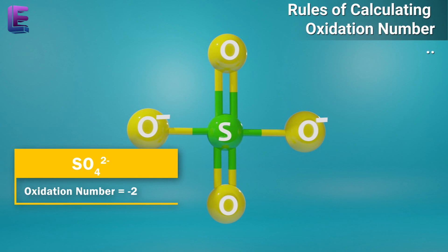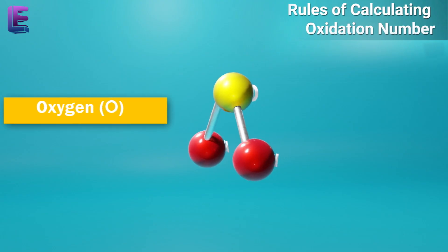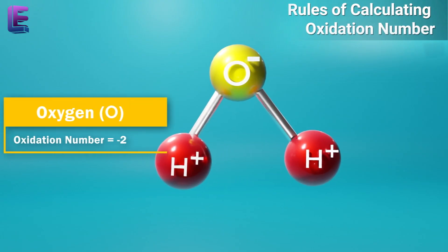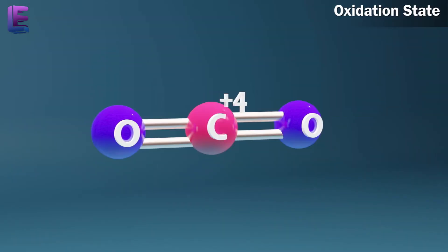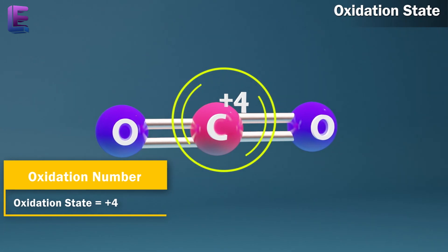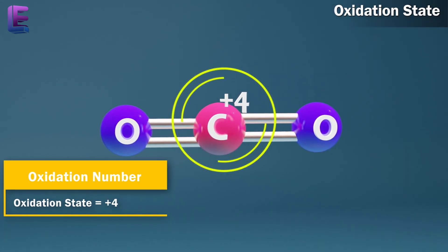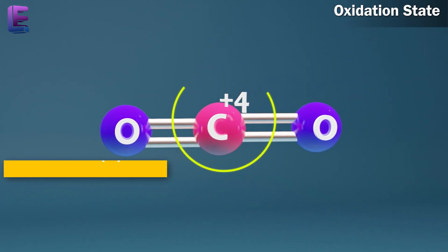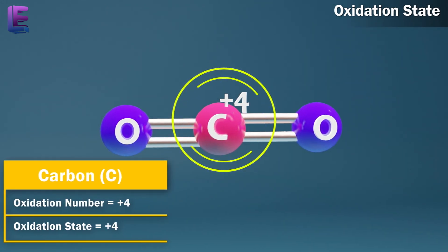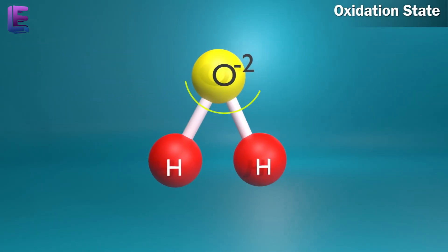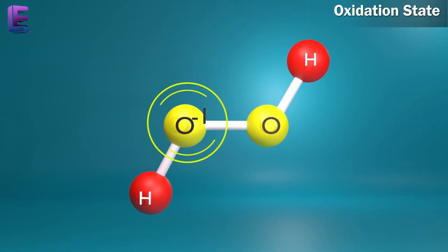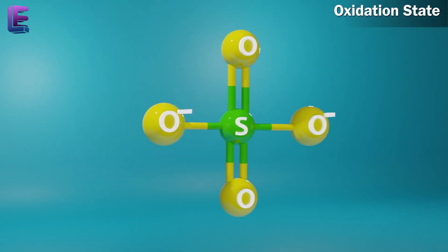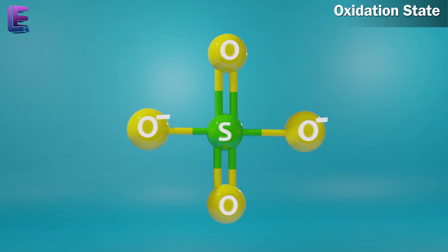In many compounds, oxygen has an oxidation number of minus two. A term often used interchangeably with oxidation number is the oxidation state. Thus, in CO2, the oxidation state of carbon is plus four — that is also its oxidation number. This implies that the oxidation number denotes the oxidation state of an element in a compound.